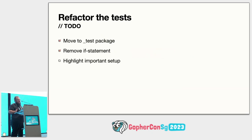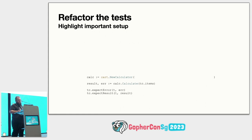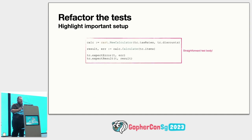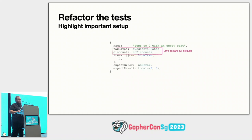We got some good changes by getting rid of those if statements — it gets a bit hairy, but that's what refactoring is about, and it got better at the end. So let's look at highlighting the important parts of what we're doing. There's a lot of stuff in the current test body that I'd rather take away and make configurable, so the test case can tell me that a discount is only for ripe bananas or these are the tax rates we're dealing with. So let's turn that into some configuration and remove some code, leaving us with a straightforward test body.